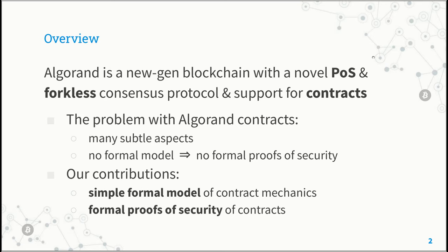Besides this, Algorand features a peculiar form of smart contracts. A problem with developing contracts in Algorand is that, even for their simplest form — the stateless contracts — the existing descriptions of their behavior are informal and incomplete. Certain subtle features and corner cases are not properly specified in the official documentation, and to understand their behavior one eventually has to resort to inspecting the source code.